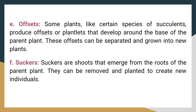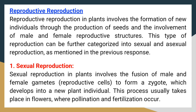Suckers. Suckers are shoots that emerge from the roots of the parent plant. They can be removed and planted to create new individuals. Reproductive reproduction in plants involves the formation of new individuals through the production of seeds and the involvement of male and female reproductive structures. This type of reproduction can be further categorized into sexual and asexual reproduction.